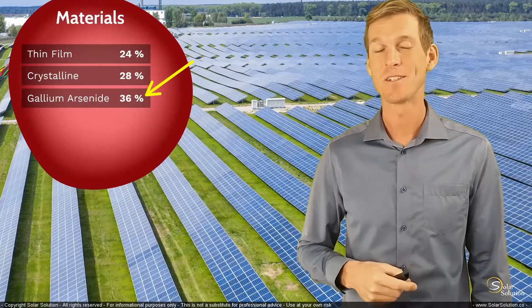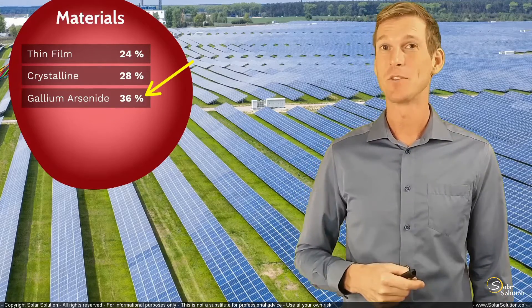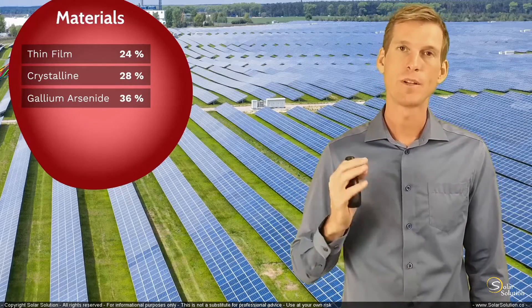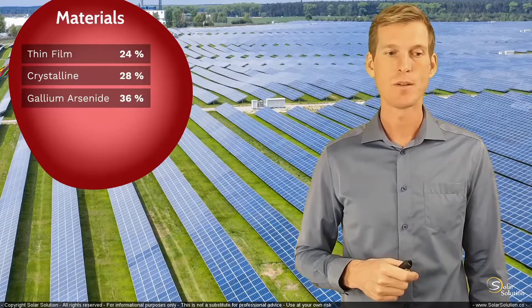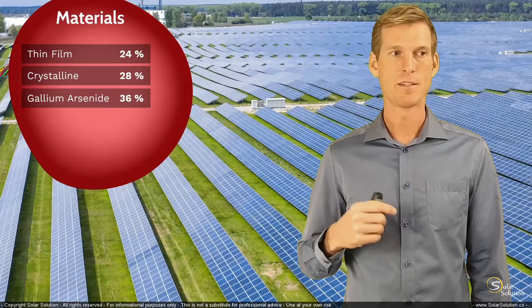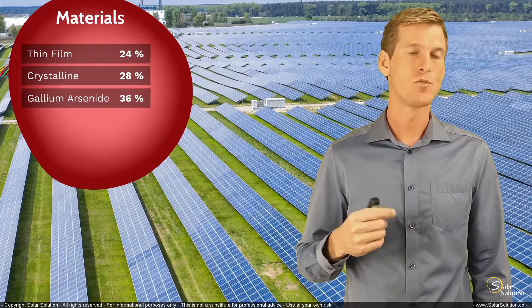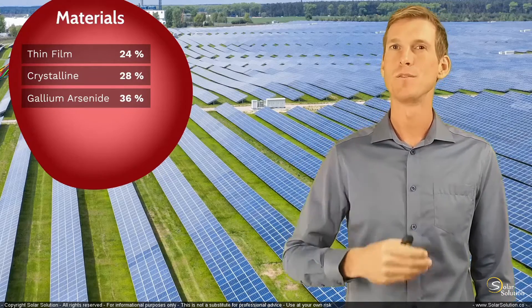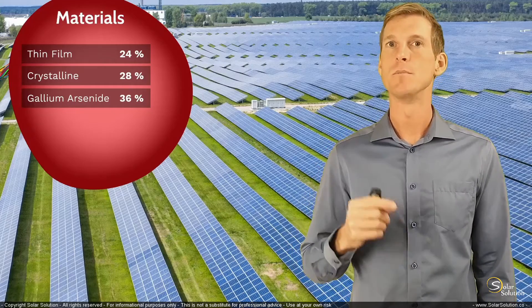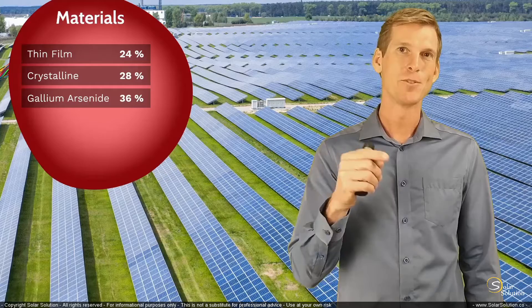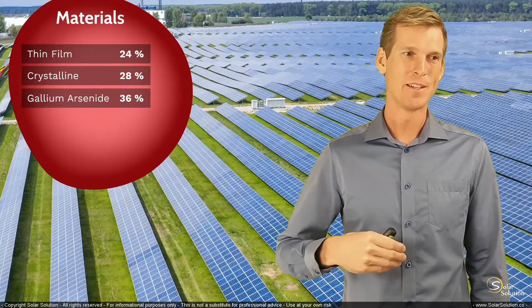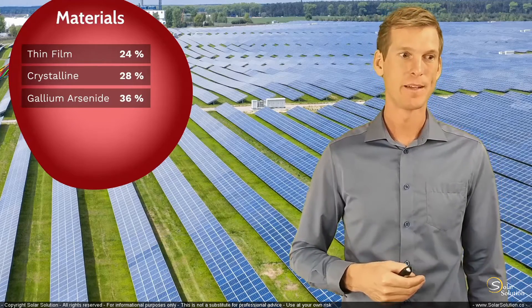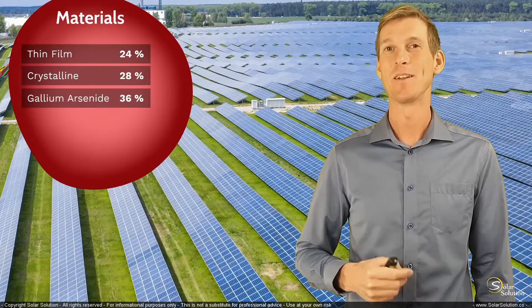The reason you probably won't use gallium arsenide is that it's still incredibly expensive. If you had an absolutely limited amount of space and didn't care about cost, you might consider it — for example, for special solar race projects or specific conditions where you want maximum yield from a very small surface. However, in almost all situations, it's far more profitable to just install a few more crystalline panels than to spend 10 to 100 times more on gallium arsenide.